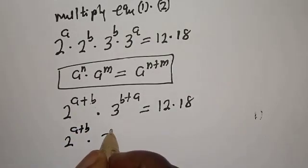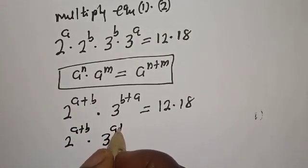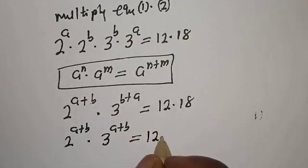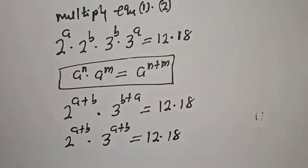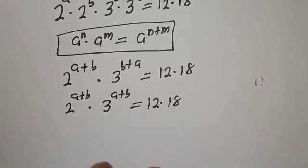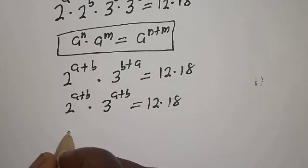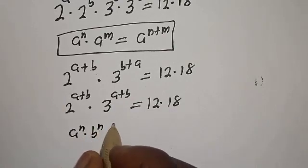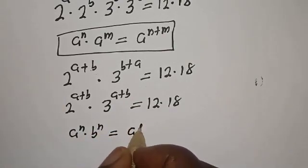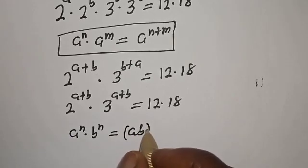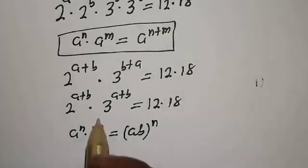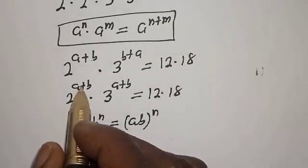Since b plus a is the same as a plus b, we have 2 raised to power a plus b, multiplied by 3 raised to power a plus b, equals 12 multiplied by 18. Now remember the rule: a raised to power n, multiplied by b raised to power n, equals (a times b) raised to power n.